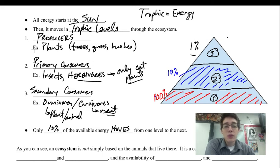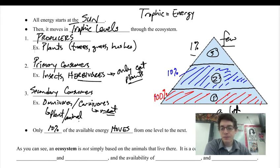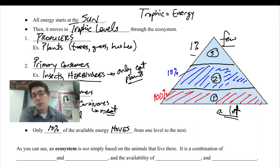So there are very few predators up here at the top, and there are a lot of producers down here at the bottom because of the available energy. And so as we can see, an ecosystem is not based simply on the animals that live there. We can describe them based on that, but it's not only that. There are other factors involved.